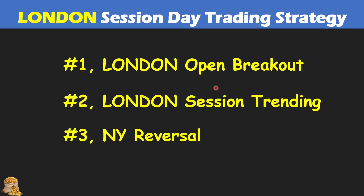For the second strategy, London session trending, normally there's a trend that will go through the New York session as well, trending in one direction. It's not necessary that there will be a London breakout — the trend could start in the middle of the London session or even sometimes from the New York session. For the third strategy, New York reversal, there is a trend direction either up or down during the London session, but when the New York traders come in they will reverse the trend direction.